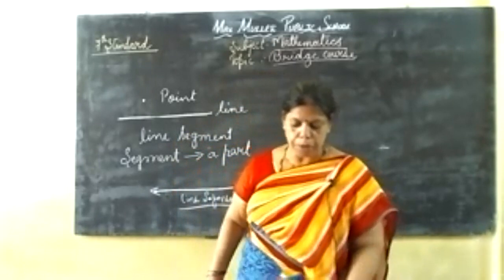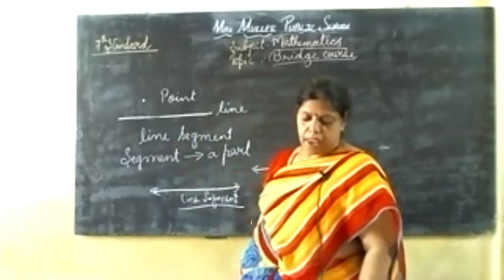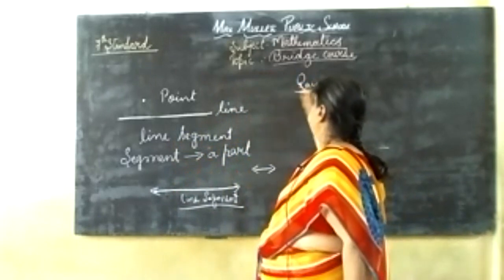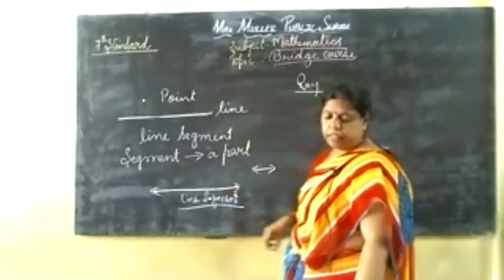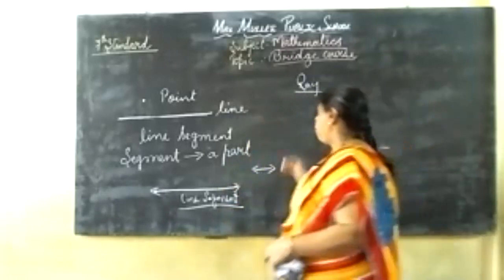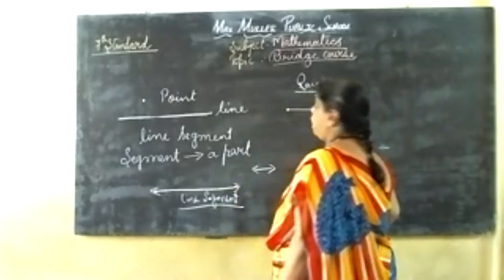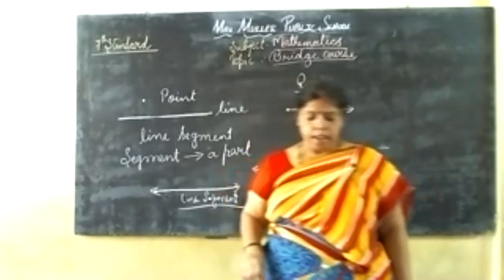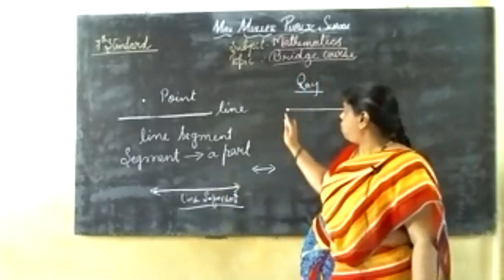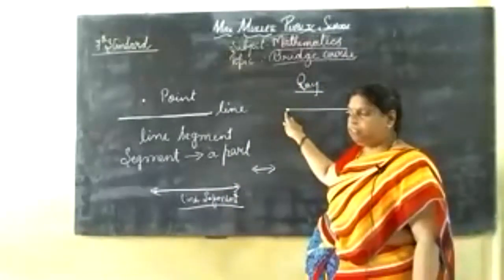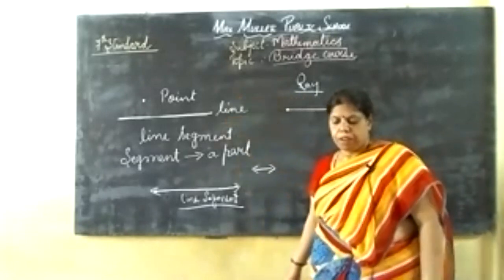Now we come to the ray. A ray has one endpoint, which is called its vertex. One end is fixed — that is the vertex — and the other end can be extended indefinitely in one direction. So a ray has one endpoint and can be extended on one side only.